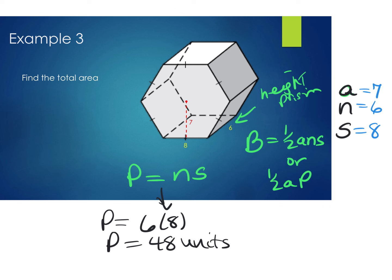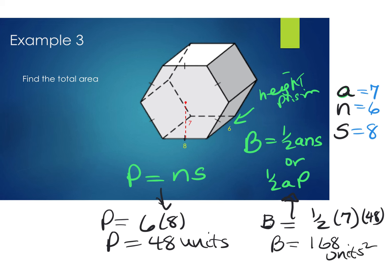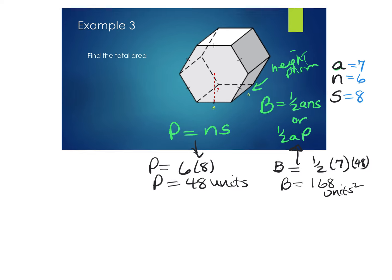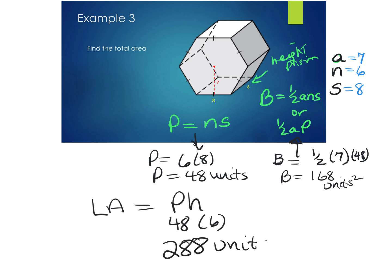Now that I have the perimeter calculated, I'll use the formula (1/2) × a × P for the base area. So (1/2) × 7 × 48 = 168 units squared. For the lateral area — perimeter times height — 48 × 6 = 288 units squared.